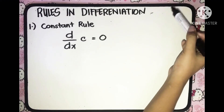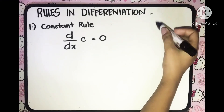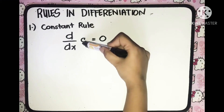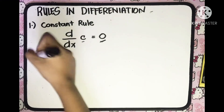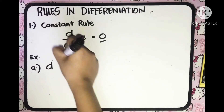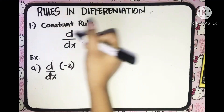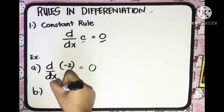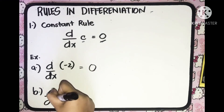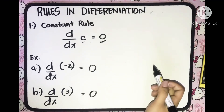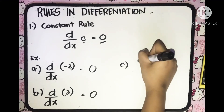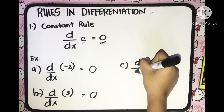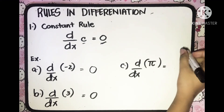Let's now look at the rules of differentiation. The first rule is the constant rule: the derivative of c with respect to x is equal to 0. The derivative of any constant is always equal to 0. For example, the derivative of negative 2 with respect to x equals 0 since negative 2 is a constant. The derivative of 3 with respect to x is also 0. And the derivative of pi with respect to x is also 0, since pi is a constant.